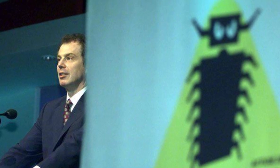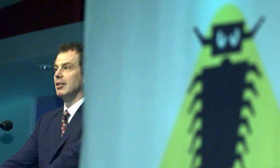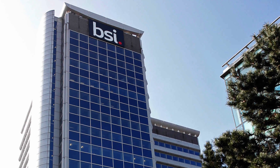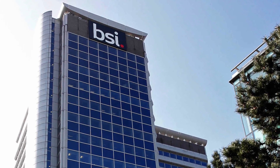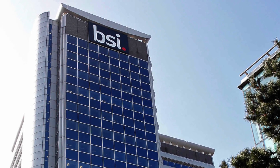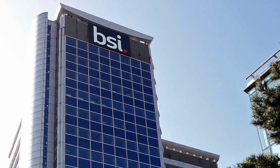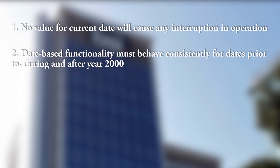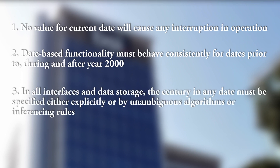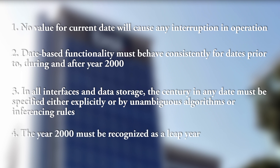The problem quickly gained public attention, and the governments of the world realised this could be a serious problem, so started taking action. In 1997, the British Standards Institute published year 2000 conformity requirements that sought to offset the issues that the Millennium Bug could cause. Four rules were set: no value for current date will cause any interruption in operation; date-based functionality must behave consistently for dates prior to, during and after year 2000; in all interfaces and data storage, the century in any date must be specified either explicitly or by unambiguous algorithms or inferencing rules; and the year 2000 must be recognised as a leap year.